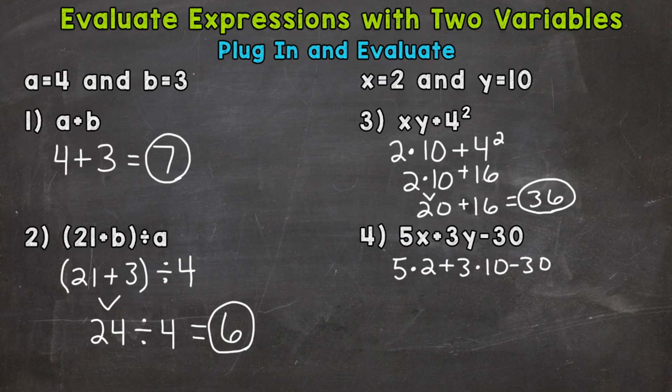Now we have 2 multiplication problems, so we can work our way from left to right. 5 times 2 is 10, and we'll bring down everything we did not use. And now we can do the other multiplication problem. 3 times 10 is 30.